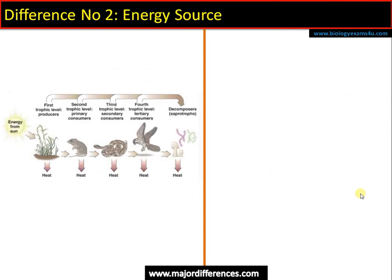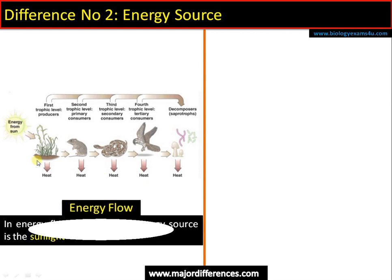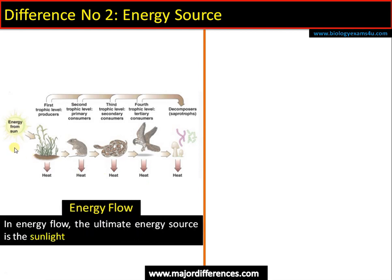Difference number two regards the energy source. In the case of energy flow, the ultimate energy source is sunlight. The energy from sunlight is trapped by producers through the process called photosynthesis, and that energy is utilized by all other organisms at each trophic level.